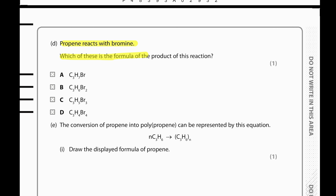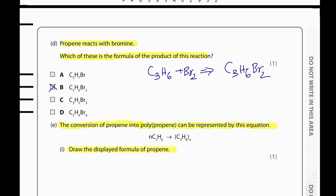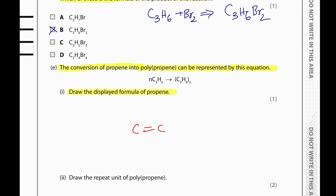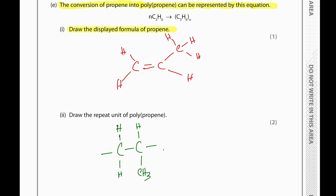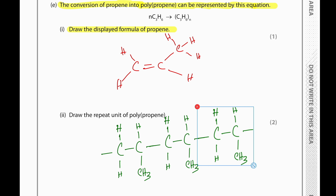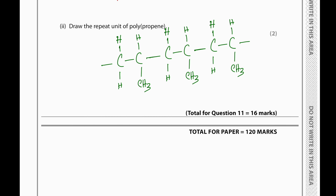Propene (C3H6) reacts with bromine in an addition reaction to give the product C3H6Br2. The displayed formula of propene shows a carbon-carbon double bond with two hydrogens at one end and a CH3 group with one hydrogen at the other. The repeat unit of polypropene is drawn by breaking the carbon-carbon double bond and extending two bonds to each side, then drawing the remainder of the structure.